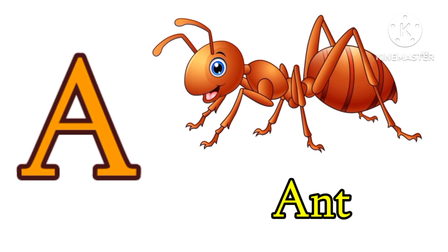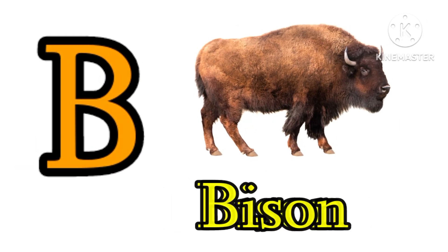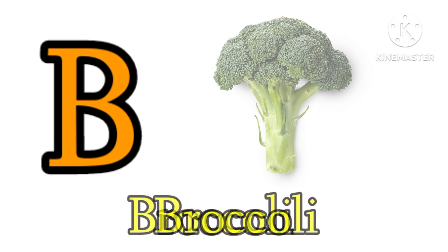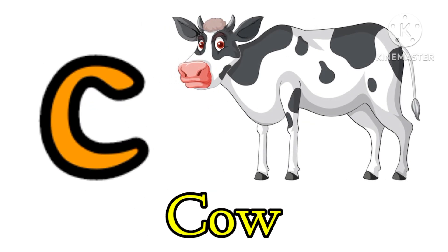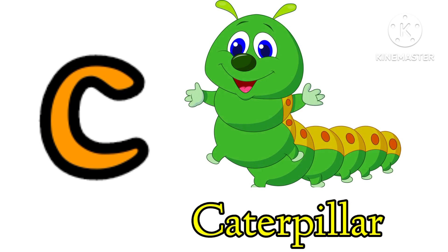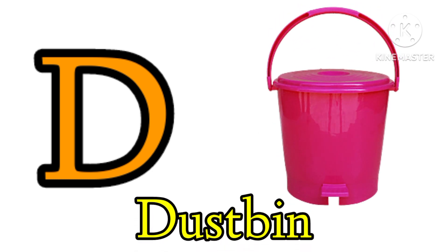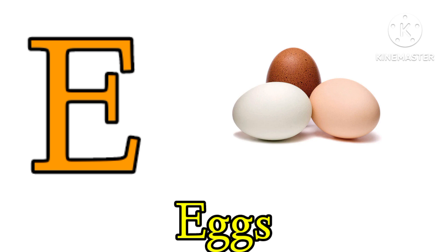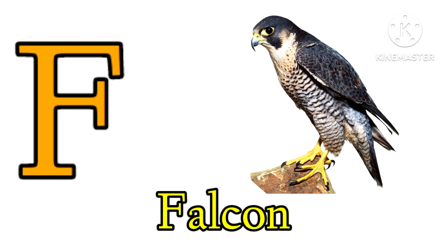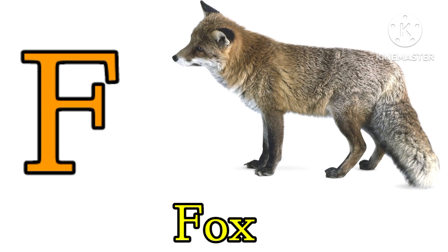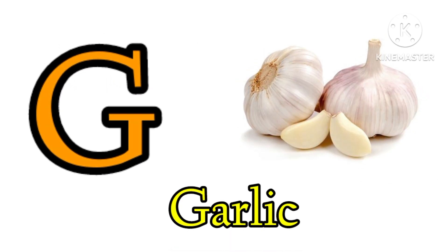A for Ant, A for Angel. B for Bison, B for Broccoli. C for Cow, C for Caterpillar. D for Dragonfly, D for Dustbin. E for Egg, E for Elk. F for Falcon, F for Fox. G for Garlic, G for Ground Nuts.